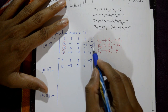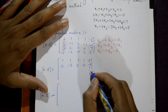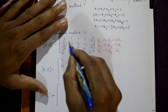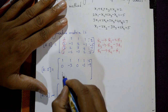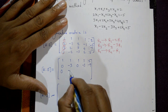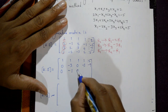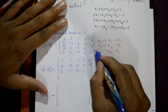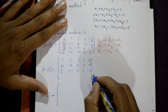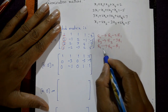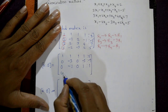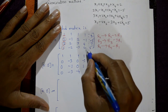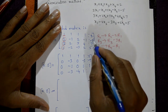For R3 = R3 minus 3·R1: 0, -1, -1, -3, and 7 minus 6 is 1. For R4 = R4 minus R1: 0, -3, -4, 1, and 5 minus 2 is 3. So the second column now shows 0s in rows 2, 3, 4 below the leading 1.